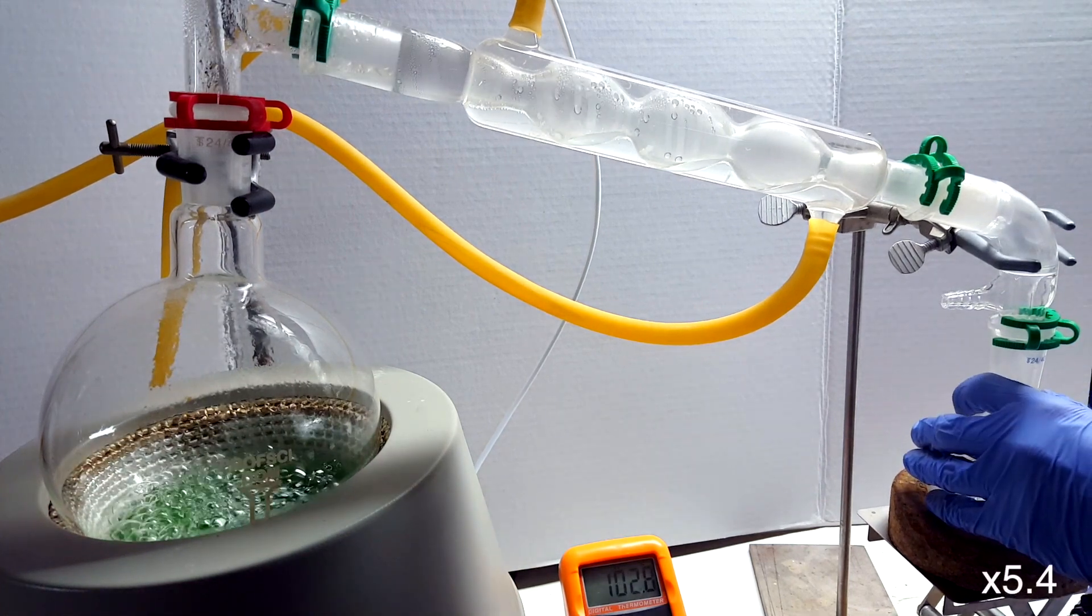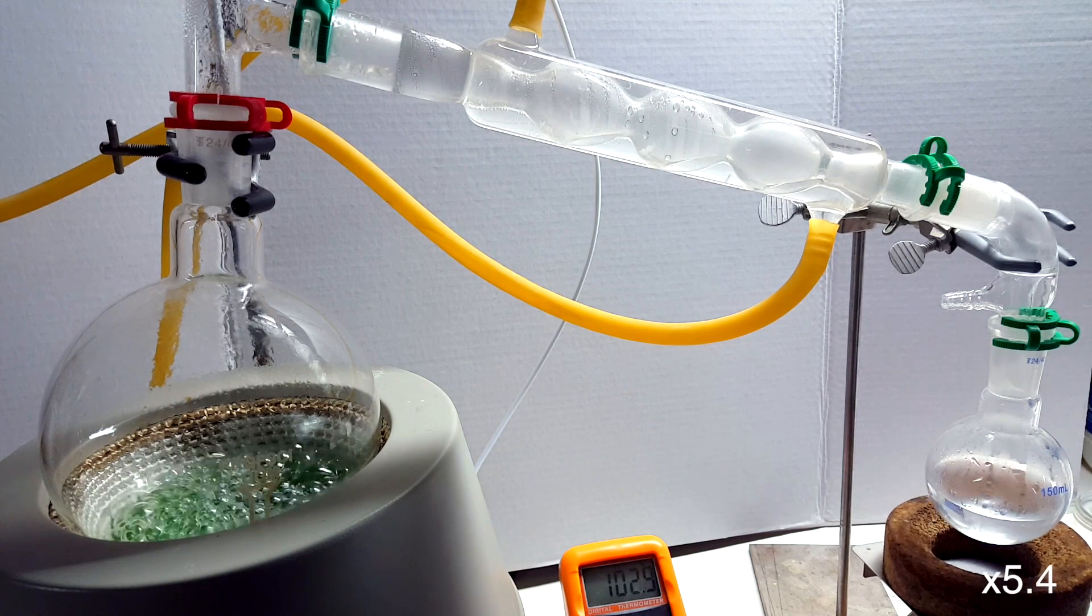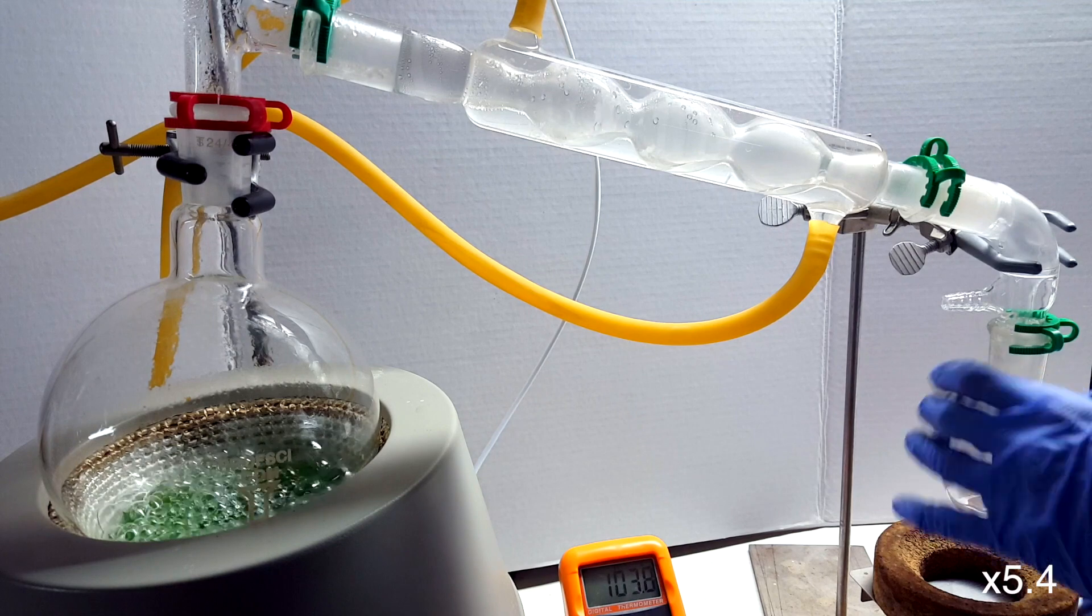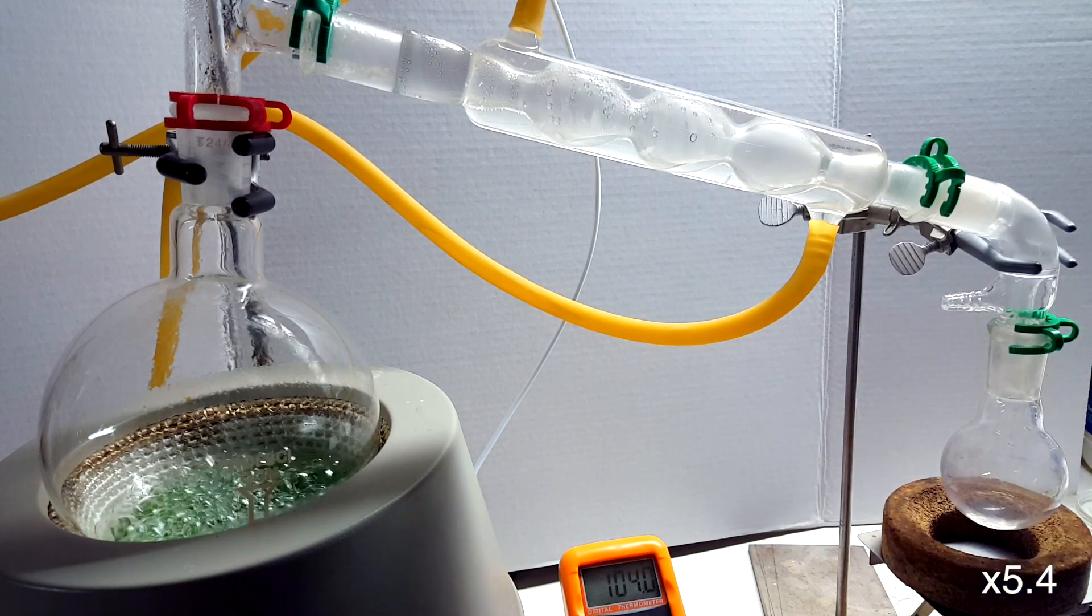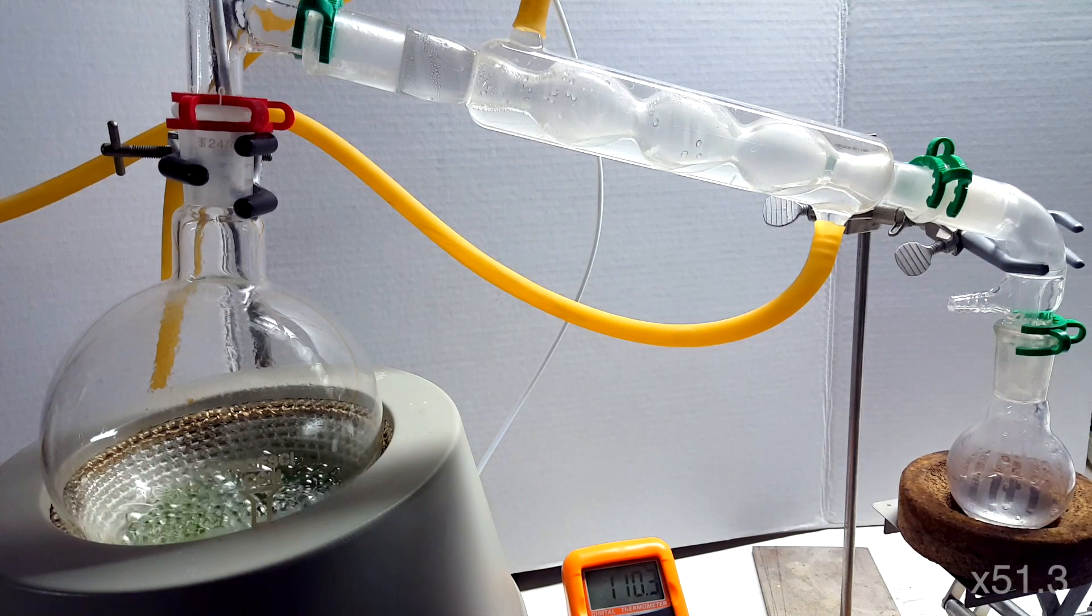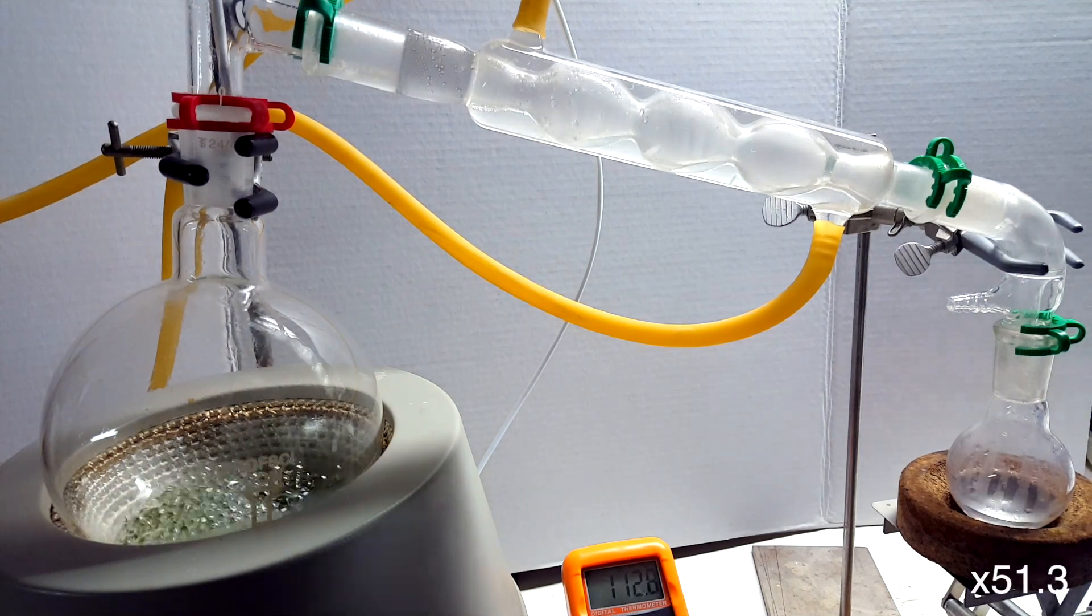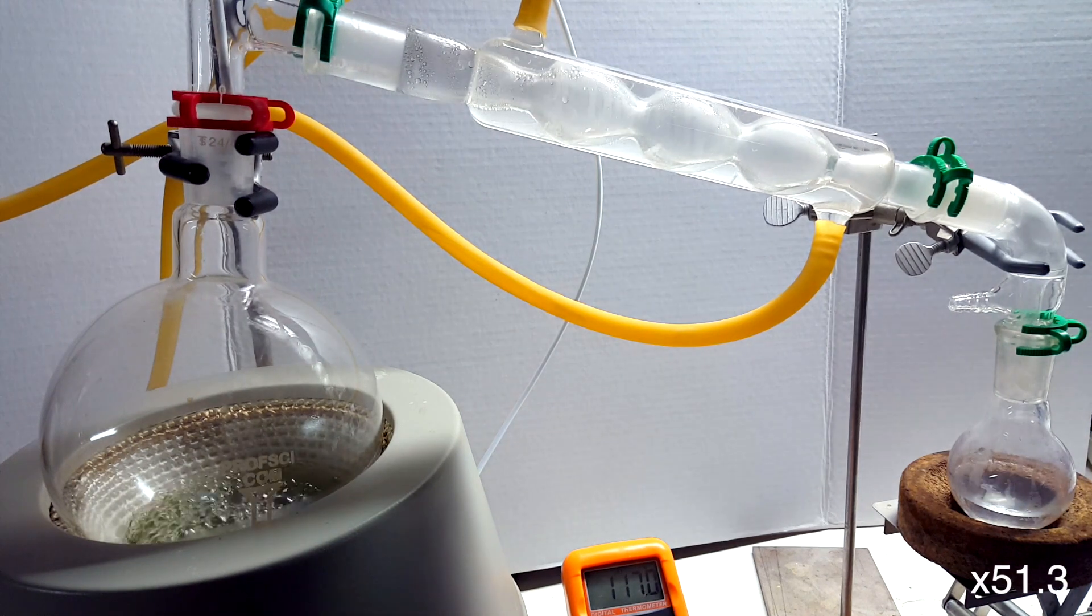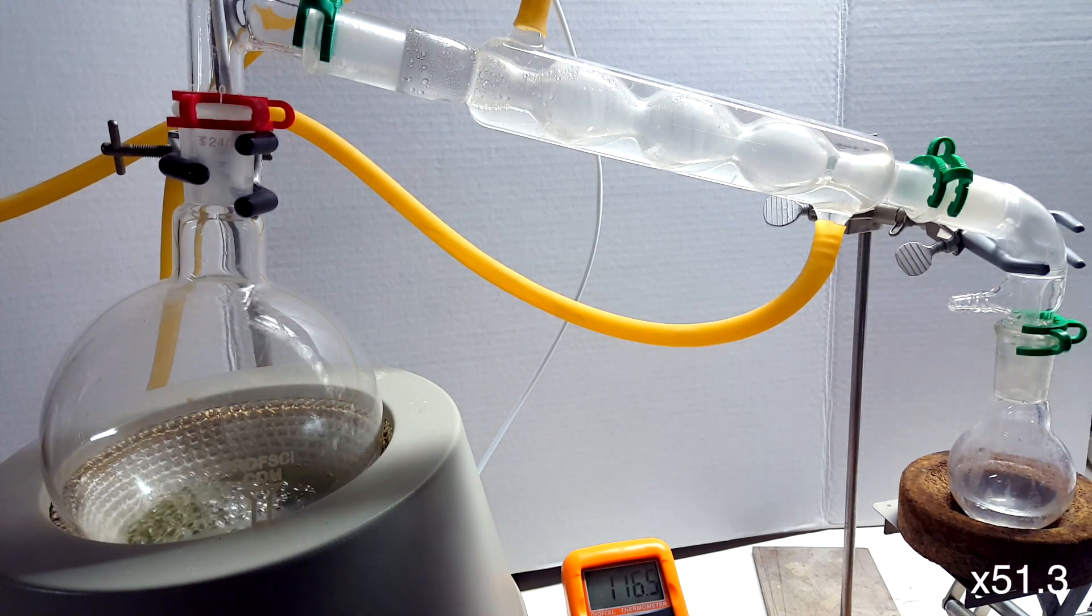Soon enough, the temperature began to rise past 102°C. So, I decided to switch out the receiving adapter. Past this temperature should distill over dilute phosphoric acid, which is useful in some experiments. The temperature increased to 117°C over the course of about 45 minutes, and the distilling solution progressively became darker and darker.